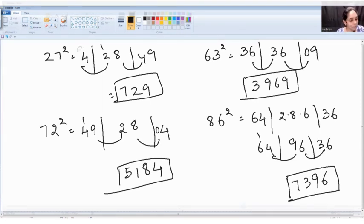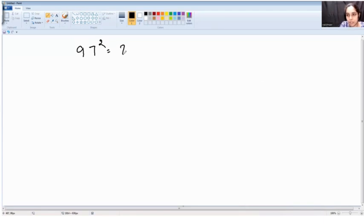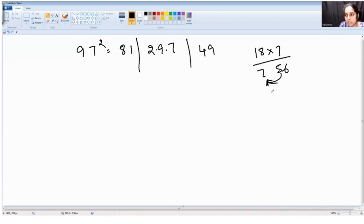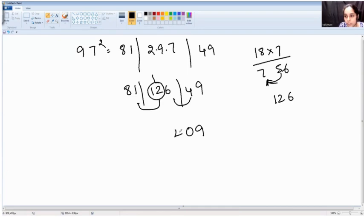One last problem. 97 square. 9 square is 81, 7 square is 49, 2 times 9 into 7. 2 times 9 is 18 into 7, which is what we call dodging. So it is 126. 81, 126, and 49. So need to add this. Now since we have 3 digits, let us take this into consideration. 9 as it is, 6 plus 4 is 10, 1 carry, 12 plus 1 is 13 plus 1 is 14. So write 4 here, 1 carry. 8 plus 1 is 9. So your final answer is 9409.